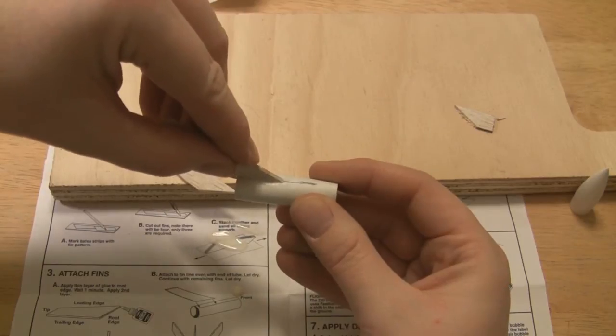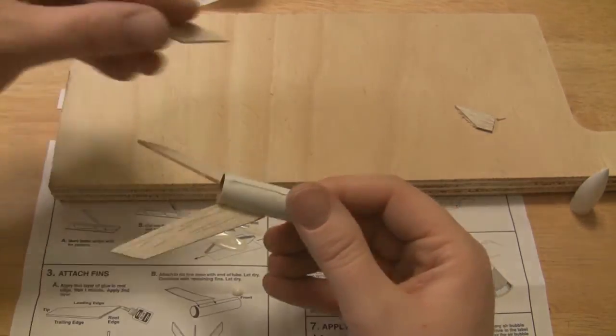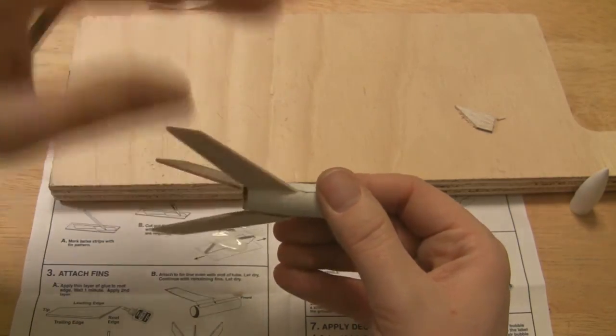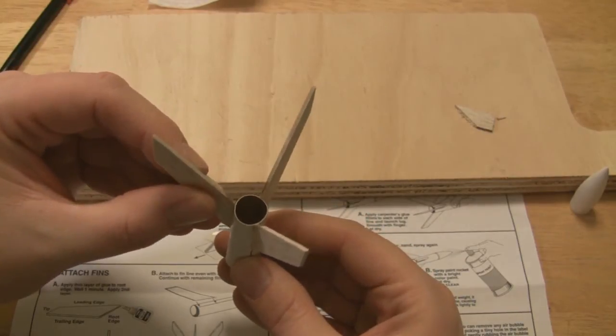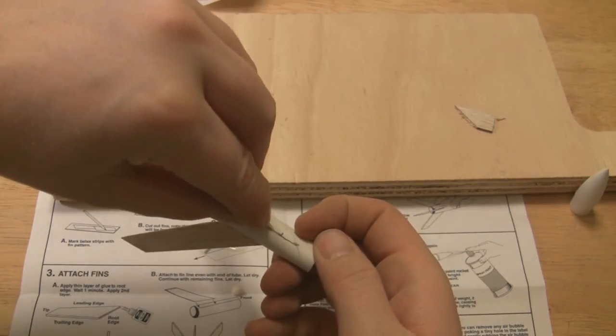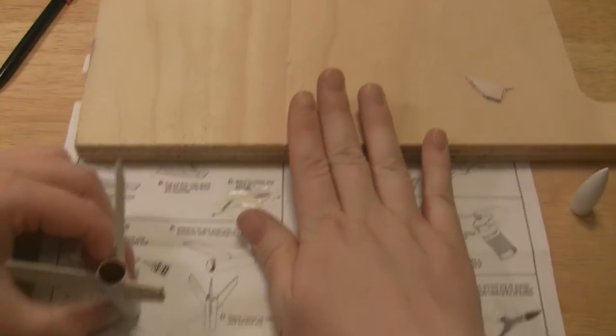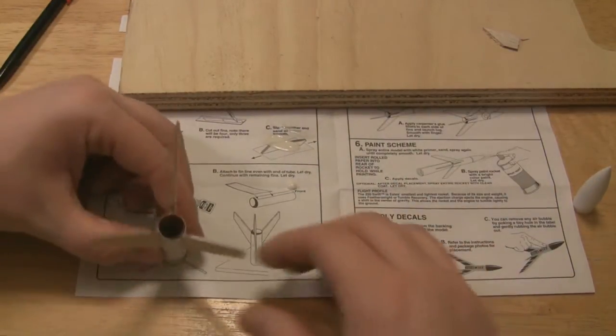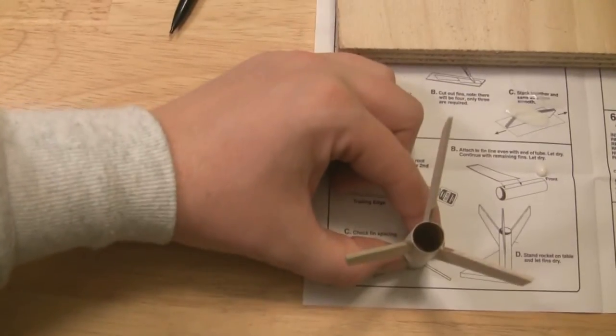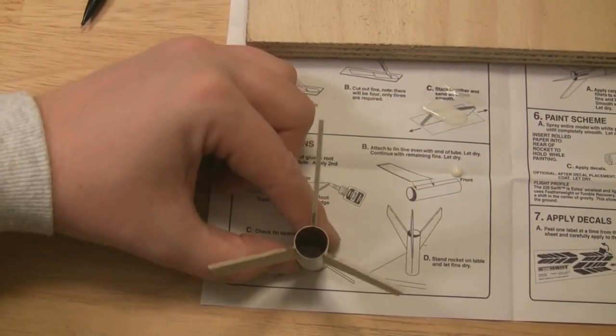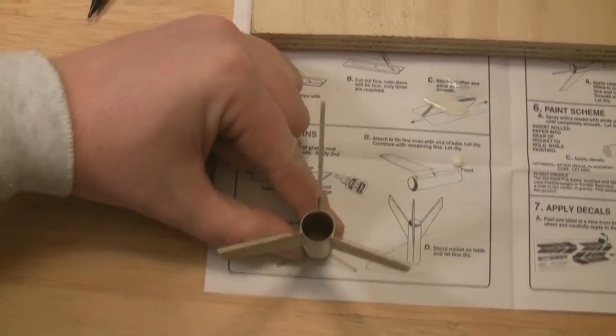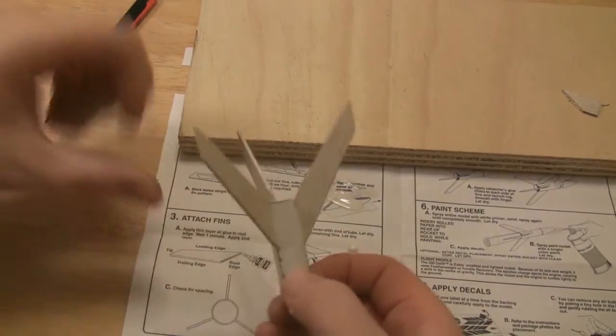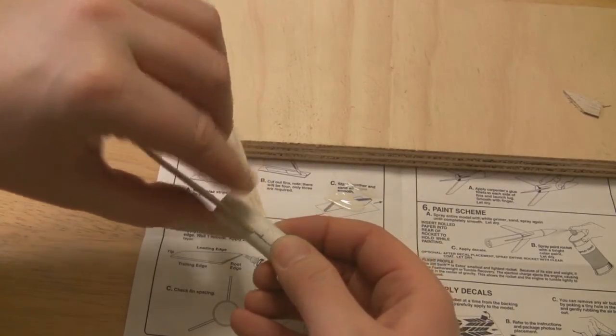You want that bottom corner of the fin to be flush or even at the bottom of the tube. And I didn't quite wait long enough on that one. And what you want to do is set it down on the instructions here and you want to look straight down. And here you're making sure that the fins are aligned, aligned with that drawing. And you want to make sure the fins are straight so you don't get a spiral or a weave. Like this fin is a little bit crooked, it's not quite lined up with the line. There we go.